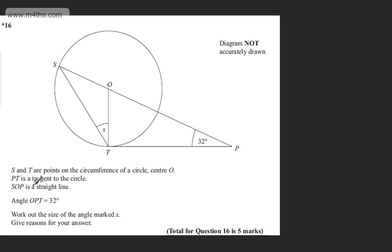PT is a tangent to the circle. SOP is a straight line. Angle OPT is 32 degrees. We're asked to work out the size of the angle marked X. It says give reasons for your answer. So it's an asterisk question and we need to build up our answer and write clearly what we're doing.